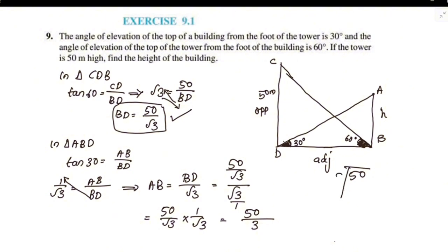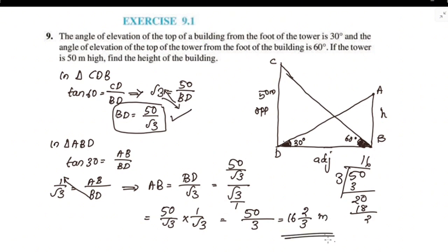Dividing: 50 divided by 3 gives 16 and 2/3. Therefore, the height of the building is 50/3 meters, which is 16⅔ meters.